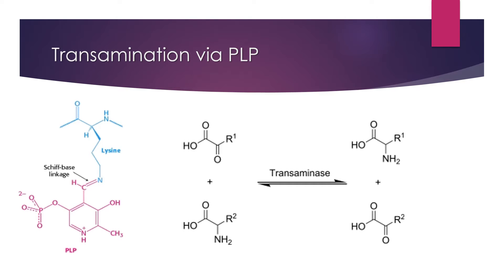The main focus of this video is transamination via PLP, because there are multiple functions that PLP takes part in, and for this case it's transamination. Transamination basically results in a keto acid becoming an amino acid — very important. What it does is transfer the alpha amino group of an amino acid to a keto acid, forming a new amino acid and a new keto acid.